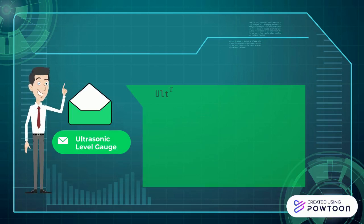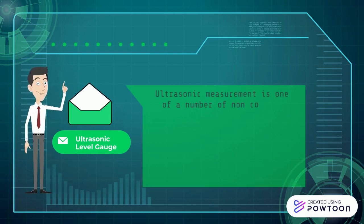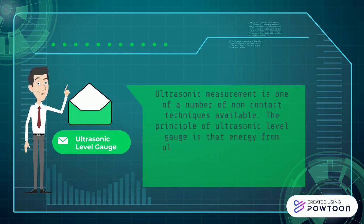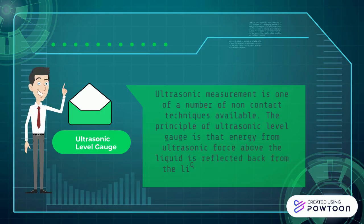Ultrasonic level sensors. Ultrasonic measurement is one of a number of non-contact methods available. The principle of the ultrasonic level gauge is that energy from an ultrasonic source above the liquid is reflected back from the liquid surface into an ultrasonic energy detector.